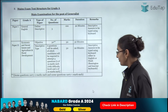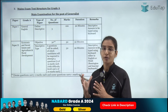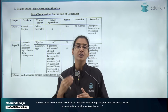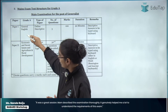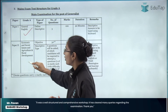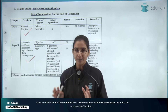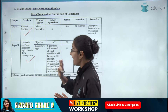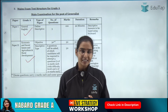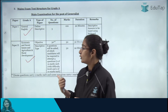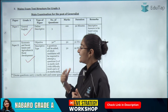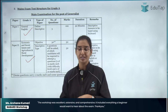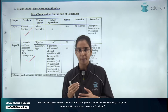Students, first of all, if we look at the pattern and the structure of the paper — in the mains examination, there are going to be 2 papers. For the generalist posts, there is going to be a paper of General English and a paper of ESI and ARD. For all positions, whether generalist or specialist, Paper 1 is similar. As far as Paper 2 is concerned, for specialized positions it will be a subject-specific paper, and for generalist positions it will be ESI and ARD.